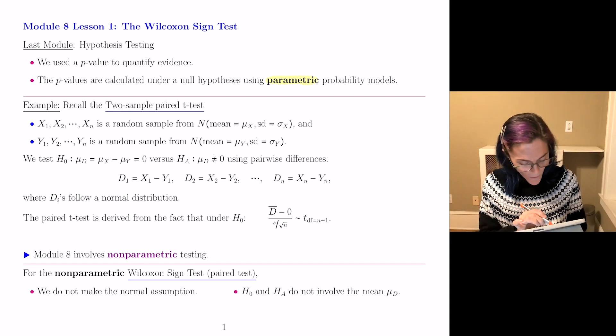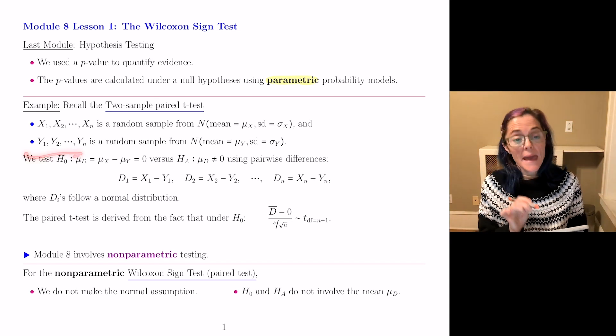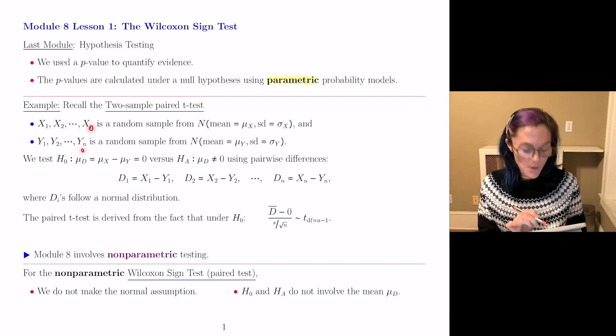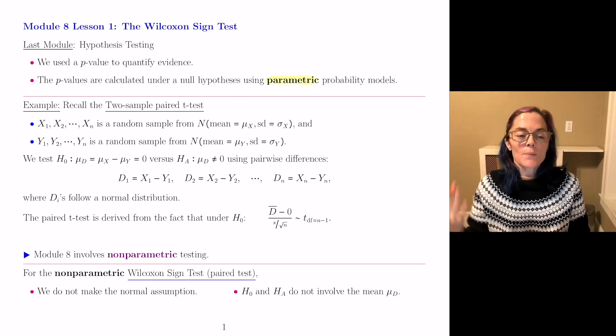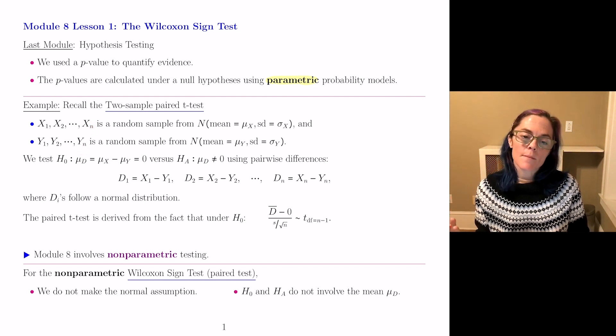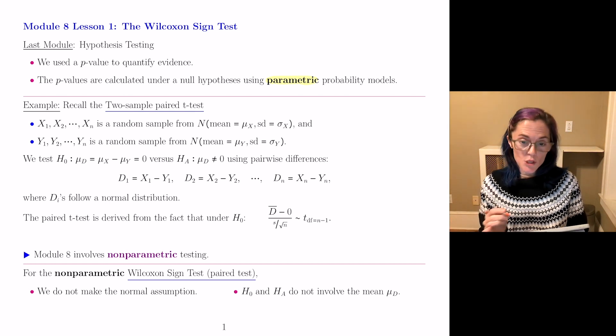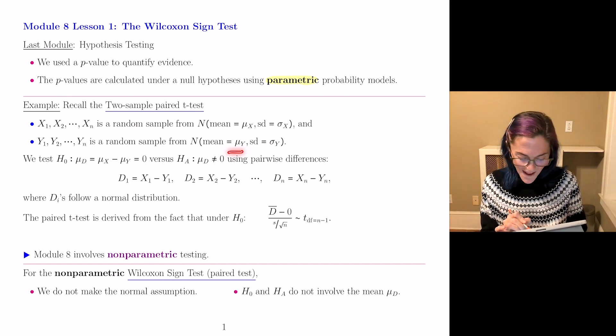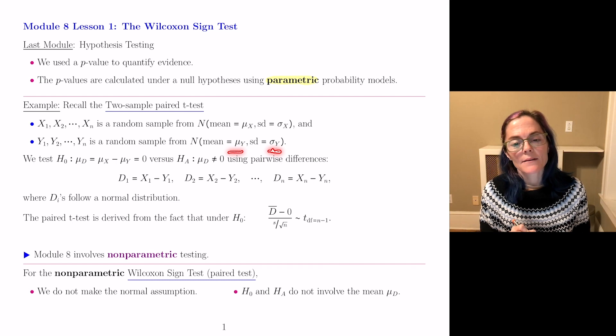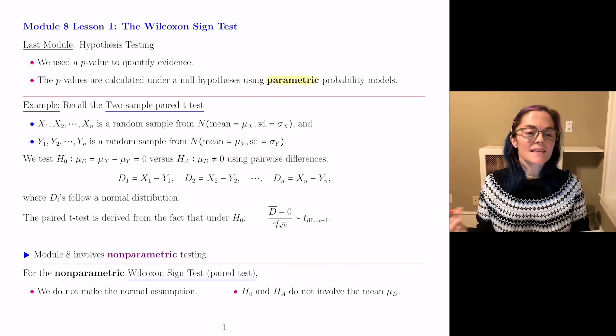and then Y₁ through Yₙ. For the paired, it was important that these are both size n, but Y₁ through Yₙ, random sample from another normal distribution, mean μᵧ, standard deviation σᵧ.